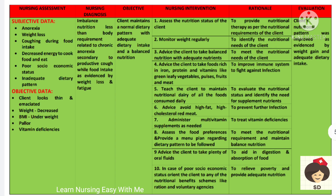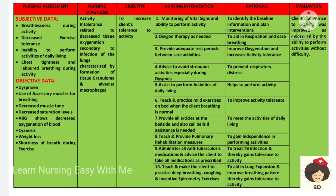The next diagnosis is activity intolerance related to decreased tissue oxygenation secondary to infection of the lungs, characterized by formation of tissue granuloma and alveolar macrophages, causing the patient to be unable to perform activities. The goal is to increase the client's tolerance to activity. Monitor vital signs and ability to perform activity. Support with oxygen therapy during activity, and provide adequate rest between care activities. Advise avoiding strenuous activity and assist with all activities of daily living. Teach and practice mild exercises in bed when breathing is normal, keep call bells and assistance at the bedside, and provide pulmonary rehabilitation measures. Administer anti-tuberculosis medicines and teach deep breathing, coughing, and incentive spirometry exercises to ease the breathing pattern and improve activity tolerance.